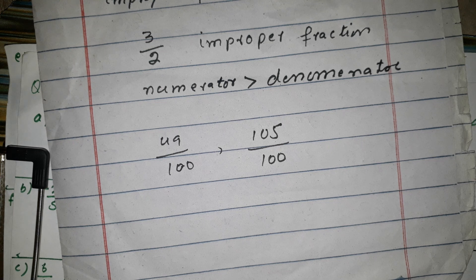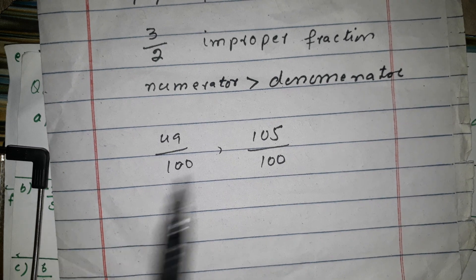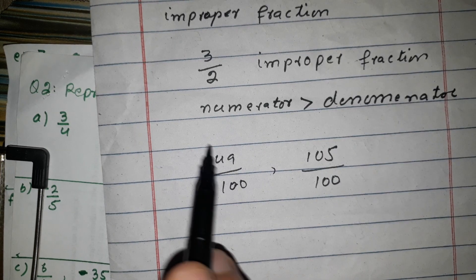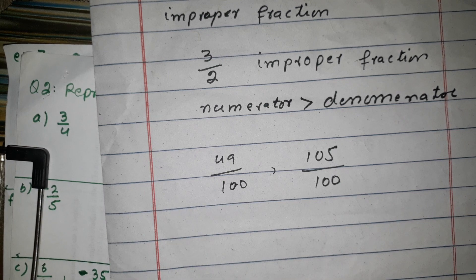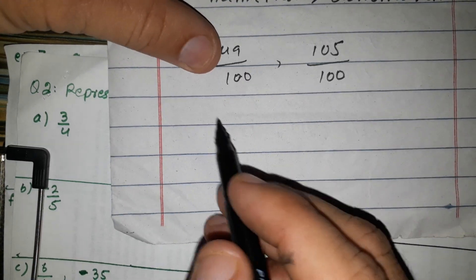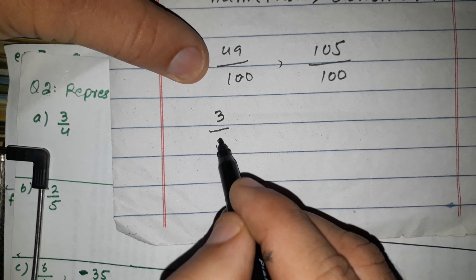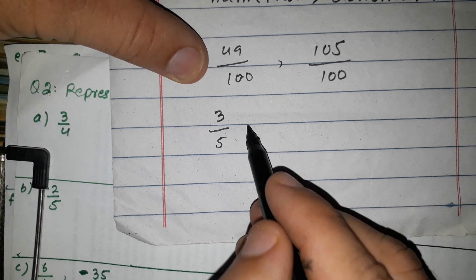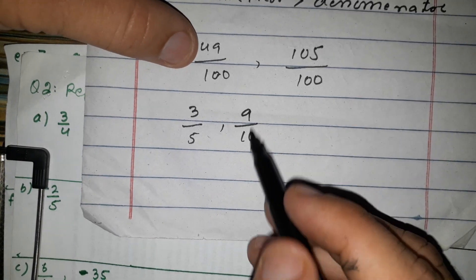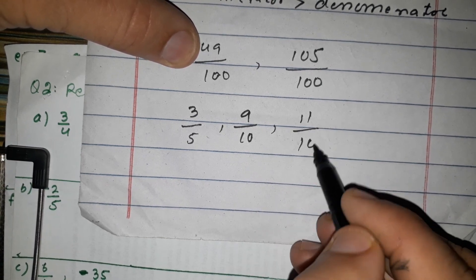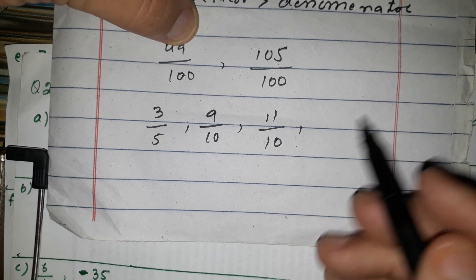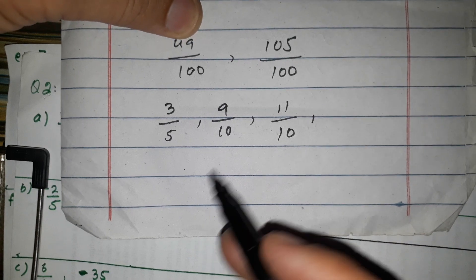6, 9, 11, 14, 15, 16. This is not possible, but this is possible. This is the proper fraction. For example, 3 by 5 — this is a proper fraction. Improper fractions are also discussed. So this is an example.